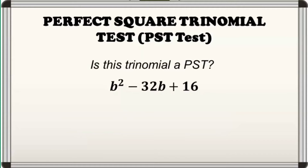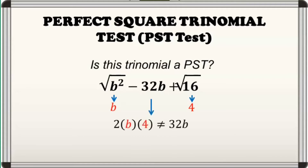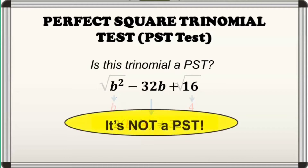And for the last example, the given polynomial is B squared minus 32b plus 16. The first and last terms are perfect squares since B squared is equal to the square of B and 16 is equal to the square of 4, and they are both positive. First requirement is satisfied. Taking the square roots of the first and last terms, we have B and 4 respectively. Afterwards, kunin natin ang twice the product ng kanilang square roots. We have 2 times B times 4 which is equal to 8B, but not equal to our middle term which is 32b. So, masasabi natin na ang given ay hindi PST.